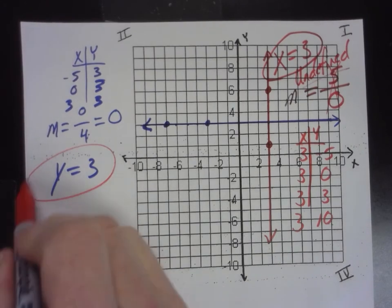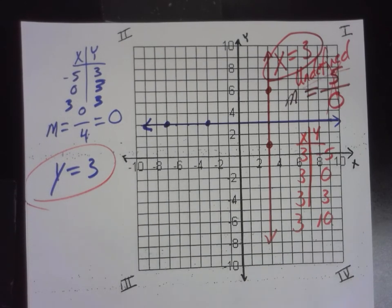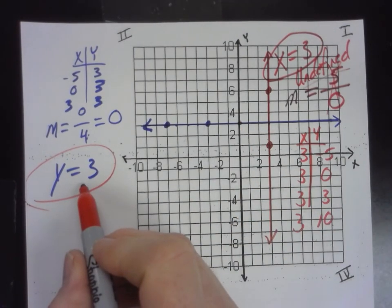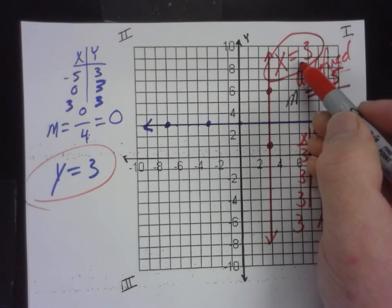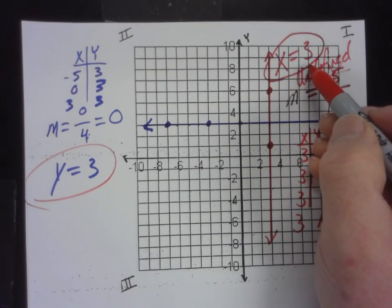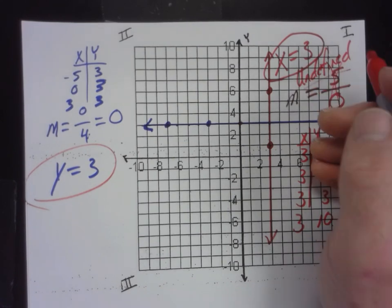Now, does this one have a Y intercept? No. Wait, yes. It does. Now, here's how you know. Is there a Y in the equation? Yes. Then it has a Y intercept. Does this one have a Y intercept? No. And how can you tell? Well, there's no Y in the equation. If there's not a Y in the equation, then it doesn't have a Y intercept. Is that pretty straightforward?